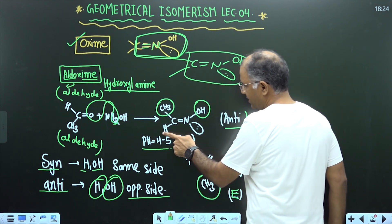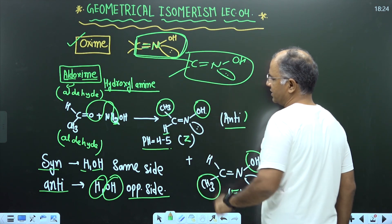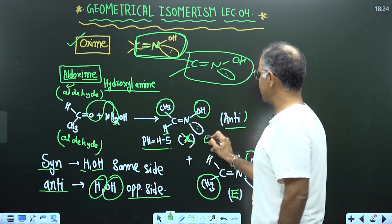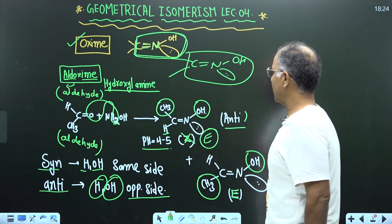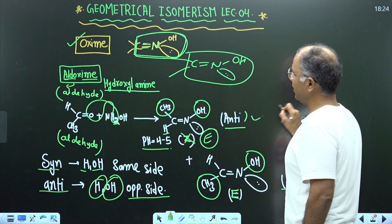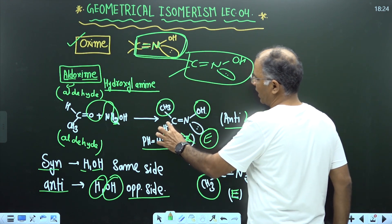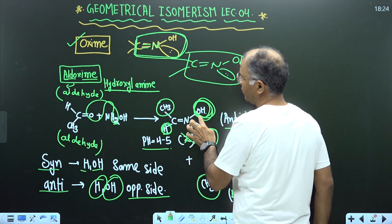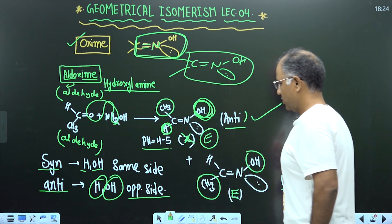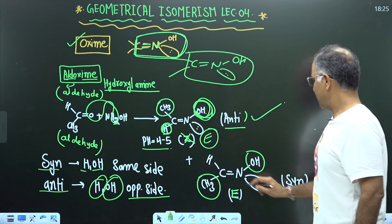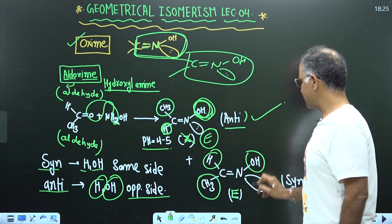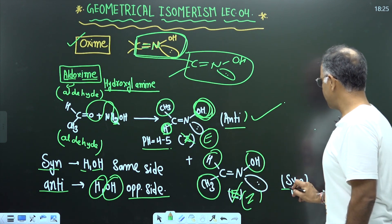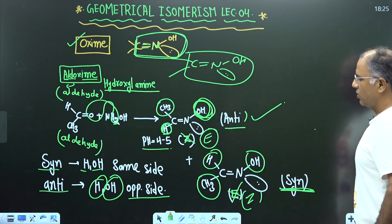Syn means same side; anti means opposite side. Now in this aldoxime, H and OH are on opposite sides, therefore we write this as E-oxime — it is also known as anti-oxime, because of this hydrogen and this OH. Similarly, for this oxime where H and OH are on the same side, it is Z — also known as syn-oxime.